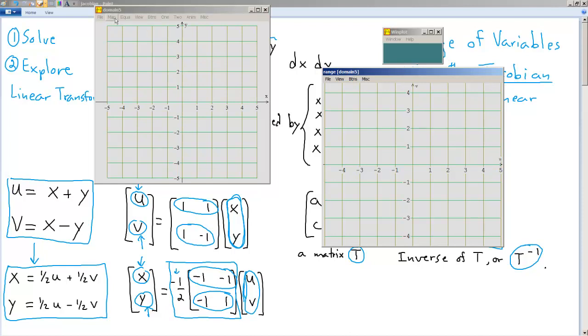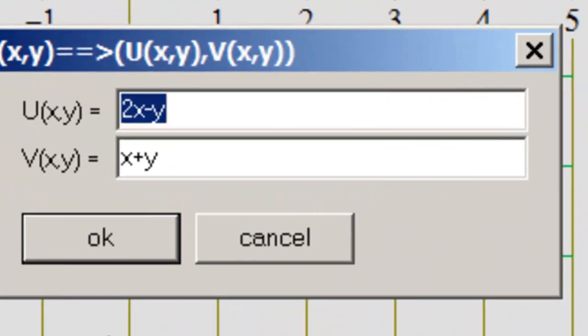Now we actually have to input our mapping, so we click on Map, New, and then we just type in whatever our mapping happens to be. In this case, U equals X plus Y, V equals X minus Y, so we'll just type that in. U equals X plus Y, and V equals X minus Y. We'll click OK.